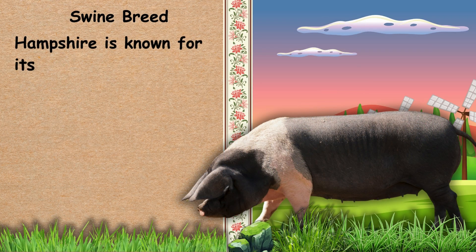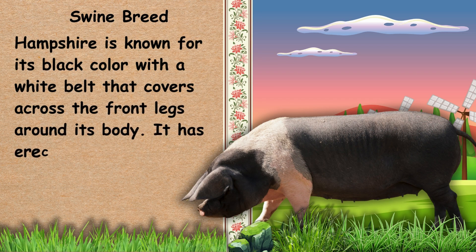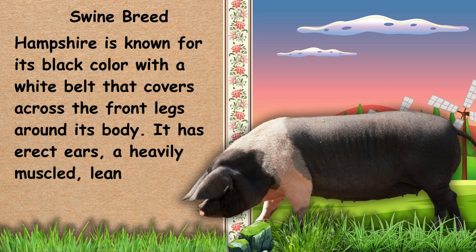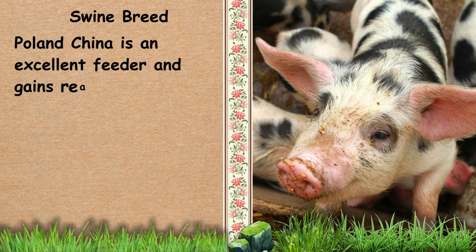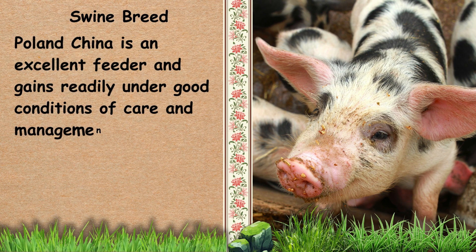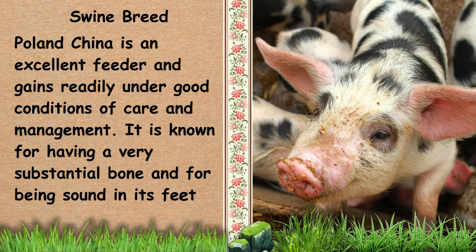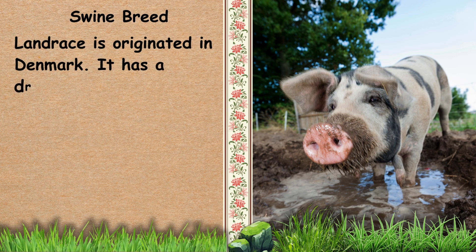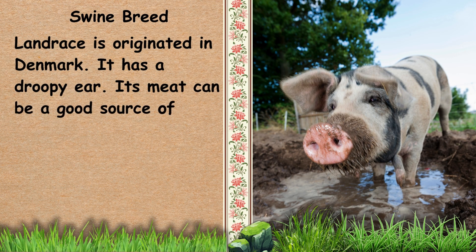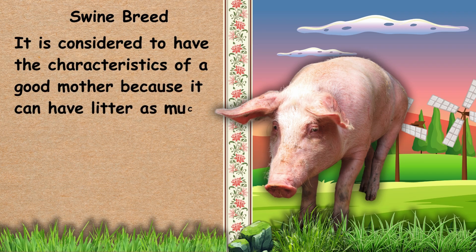Next, we have Hampshire. Hampshire is known for its black color with a white belt that covers across the front legs around its body. It has erect ears, a heavily muscled, lean meat breed. Next, we have Poland China. Poland China is an excellent feeder and gains readily under good conditions of care and management. It is known for having a very substantial bone and for being sound in its feet and legs. Next, we have Landrasa. Landrasa originated in Denmark. It has a droopy ear and its meat can be a good source of bacon with less back fat. It is considered to have the characteristics of a good mother because it can have litter as much as 11.